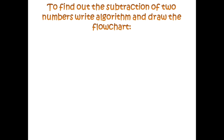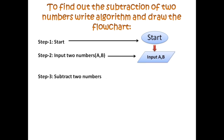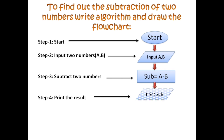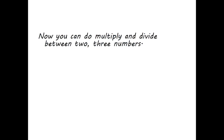Now let's do the second one: to find the subtraction of two numbers, write the algorithm and draw the flowchart. Step 1: Start — oval shape. Step 2: Input two numbers A, B — parallelogram. Step 3: Subtract two numbers, sub = A minus B. Step 4: Print the result, print sub — parallelogram shape. Step 5: Stop — oval shape.